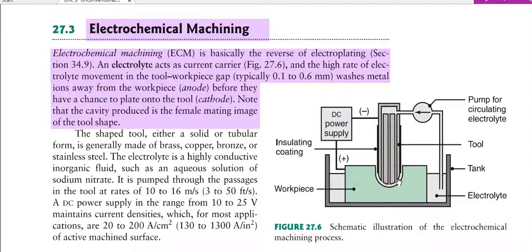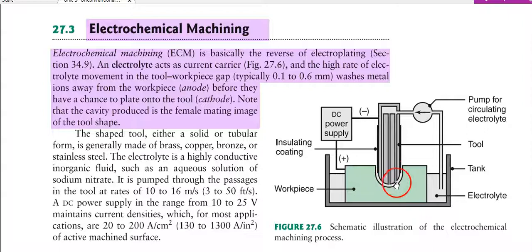Looking at the diagram: the DC power supply connects to the setup. There is an insulating coating on the tool to prevent the electrolyte from affecting it. The electrolyte is pumped into the tool-workpiece gap, carries out the electrochemical action, and then returns after the action is complete.